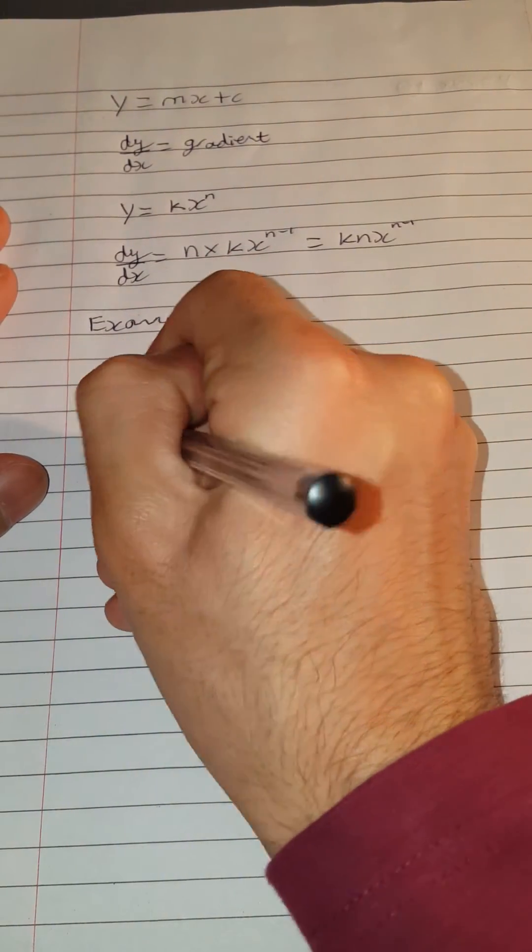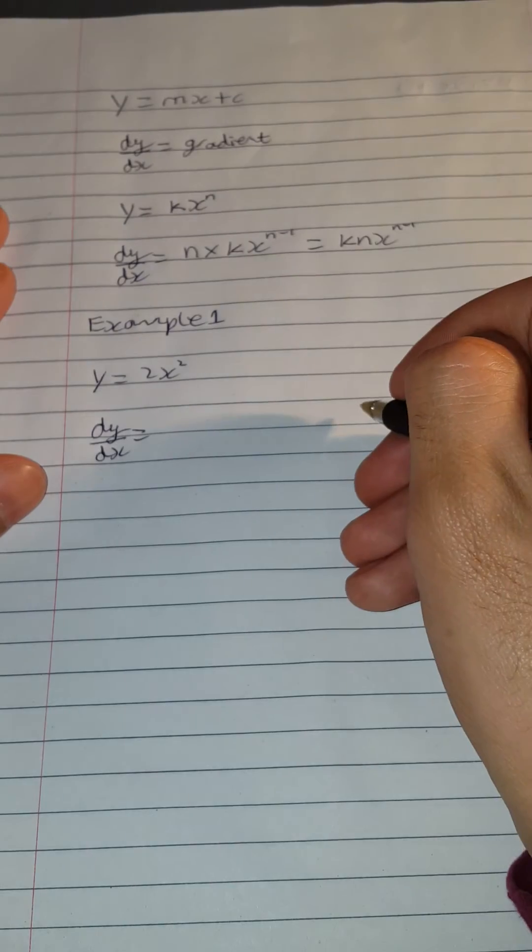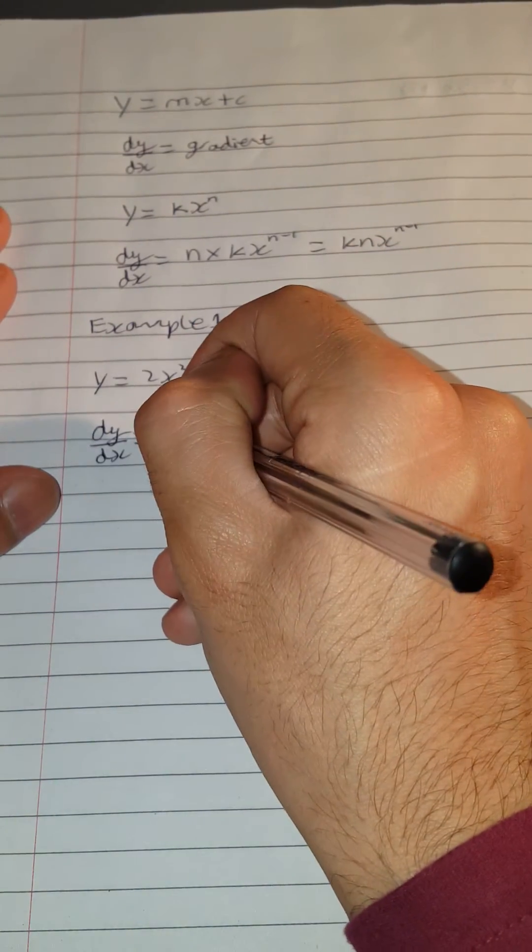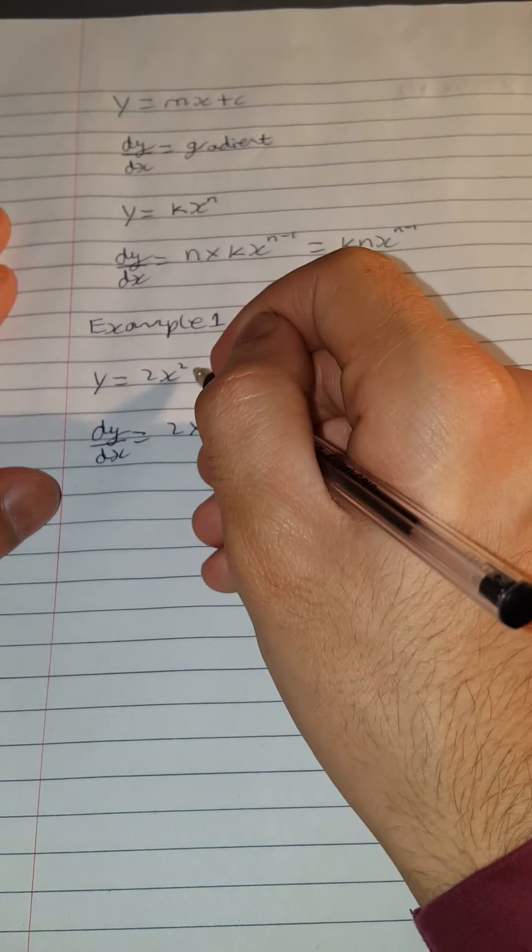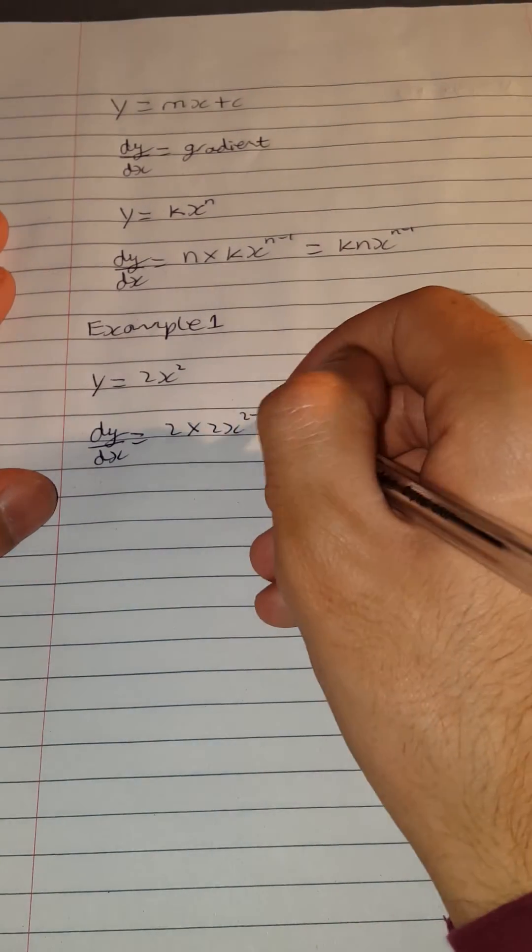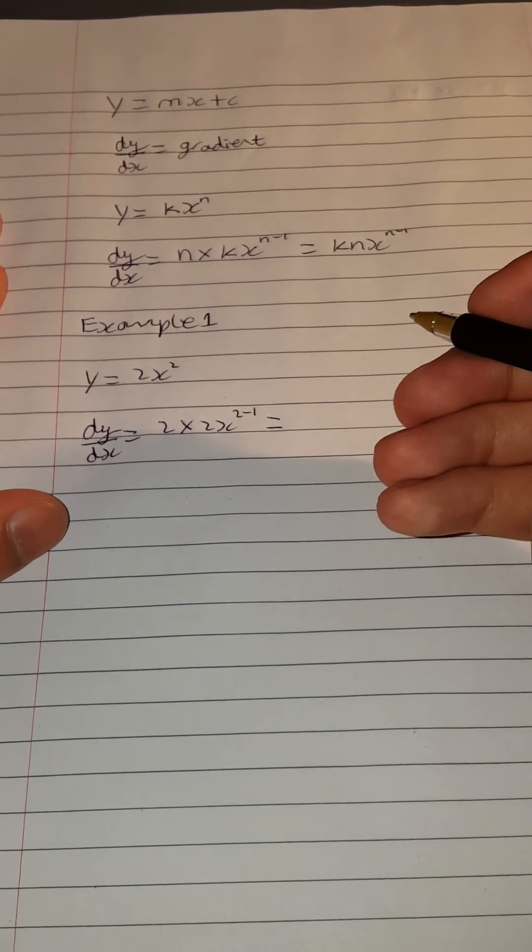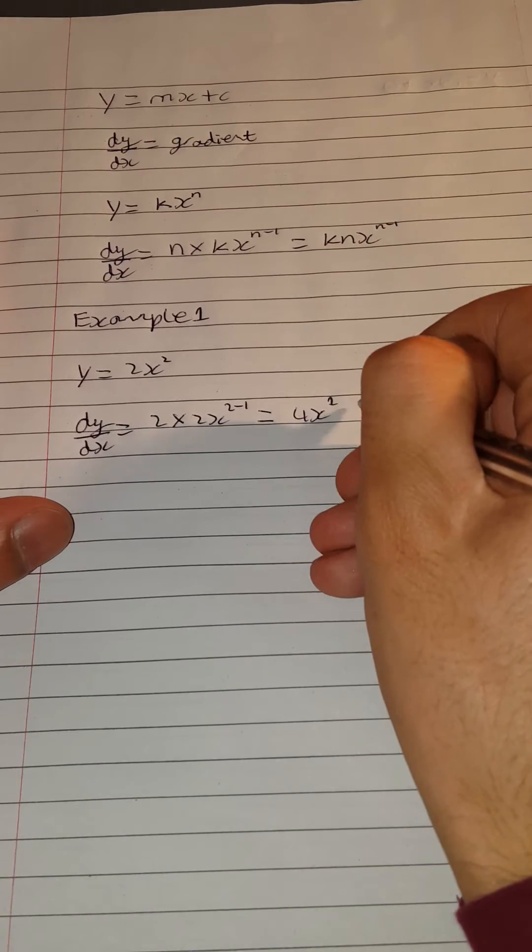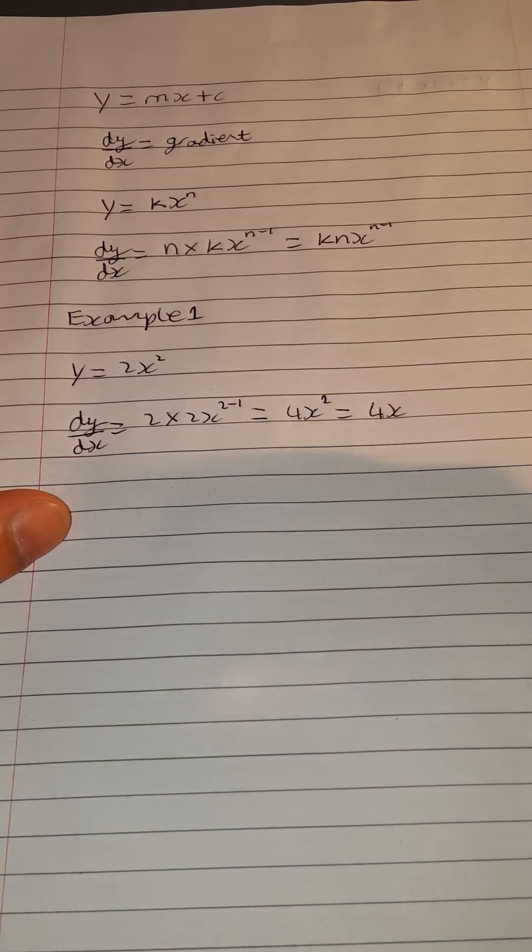So dy by dx equals, we need to multiply by the power, so it will become 2 times 2x. And we need to subtract 1 from the power, so it becomes 2 minus 1. So dy by dx, simplifying it, becomes 4x to the 1, which is just the same as 4x.